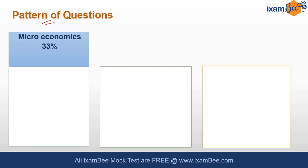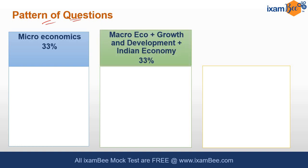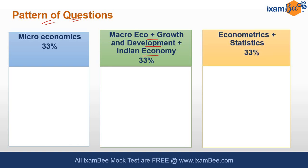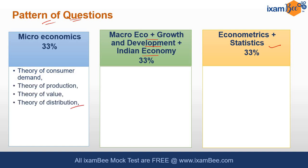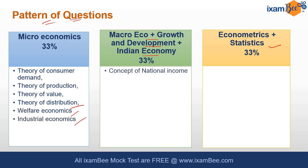If you see the pattern of questions: microeconomics carries about 33% of the weight, macroeconomics — including growth, development, and Indian economy questions — about 33%, and just one third is econometrics and statistics. Microeconomics topics include theory of consumer demand, theory of production, theory of value, theory of distribution, welfare economics, and industrial economics.